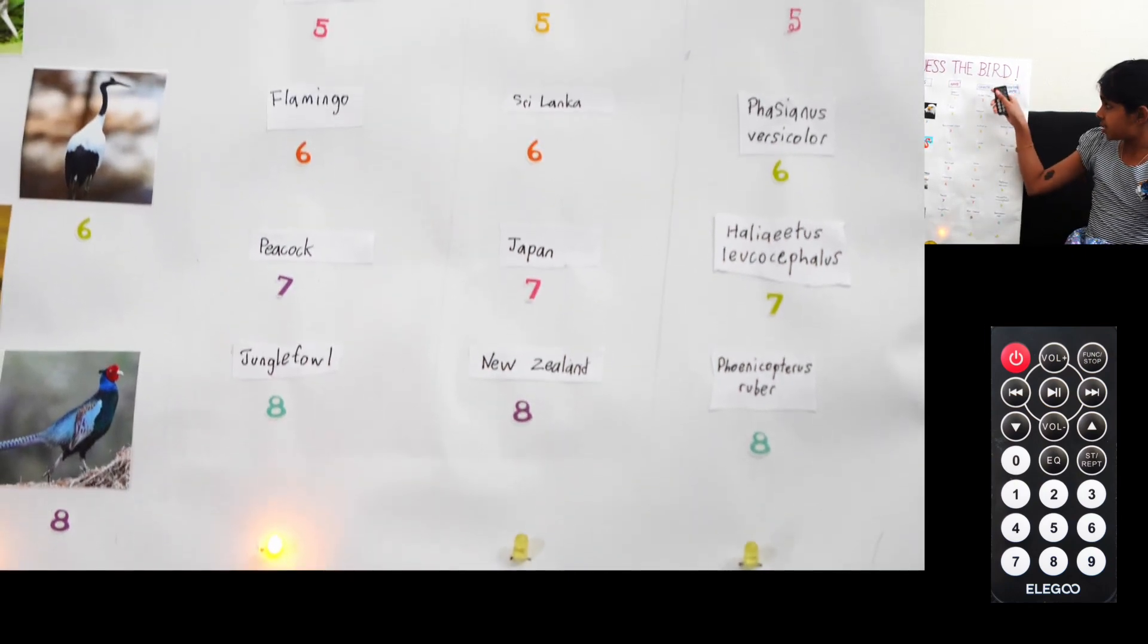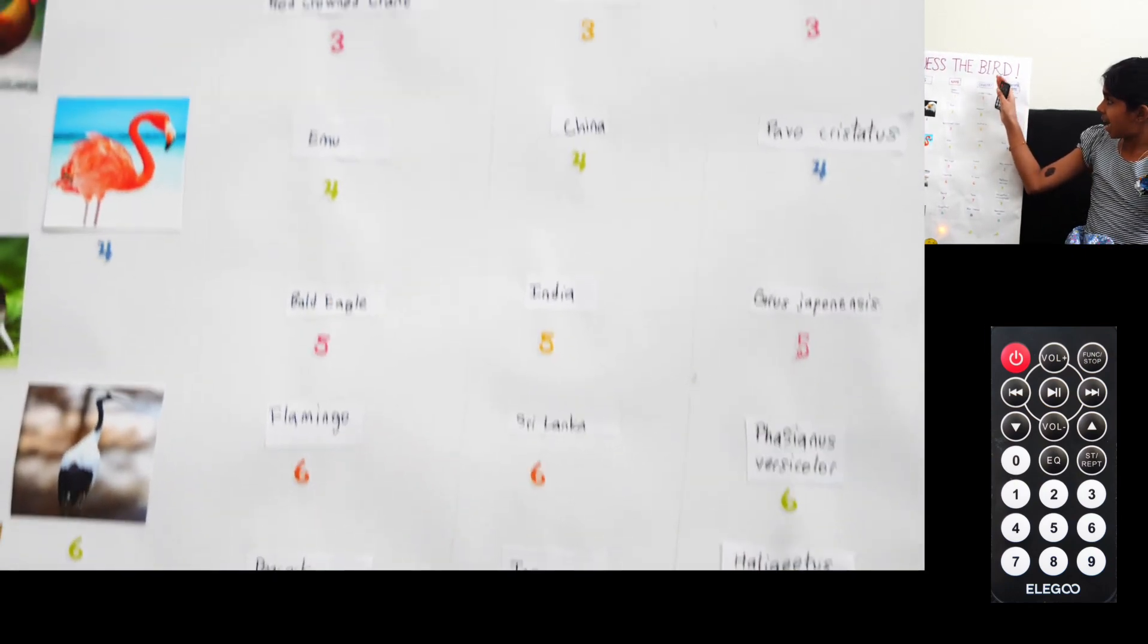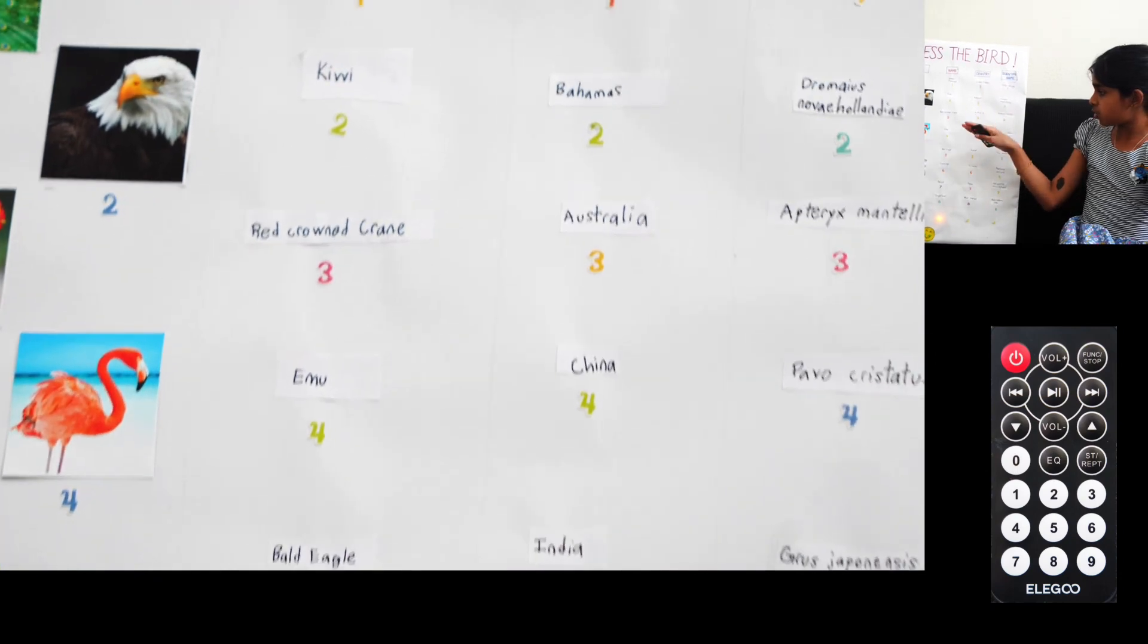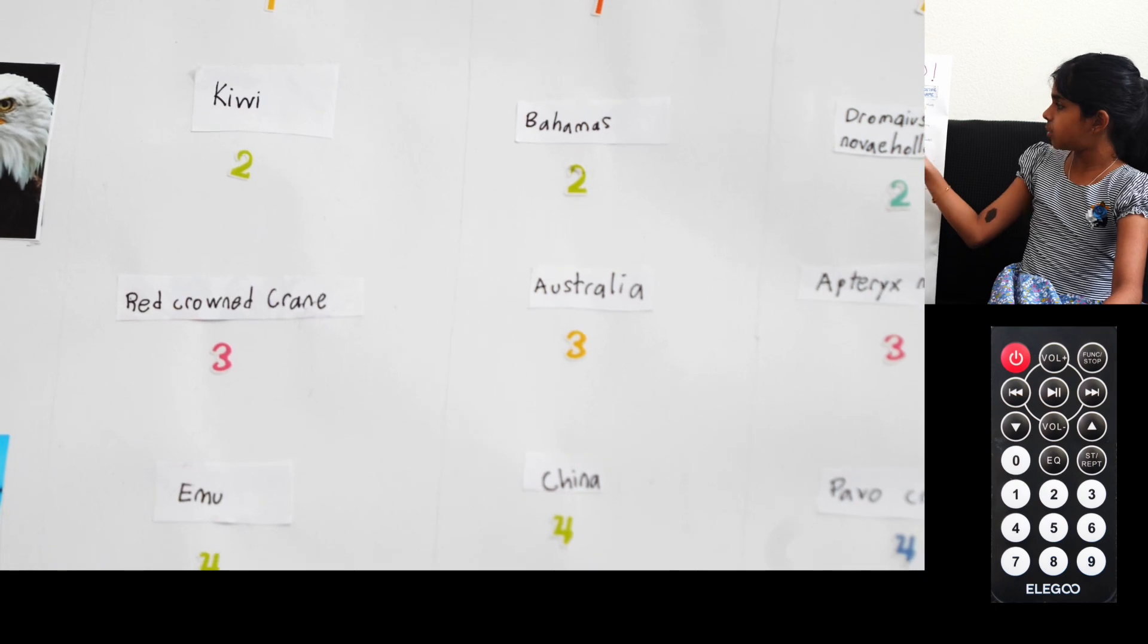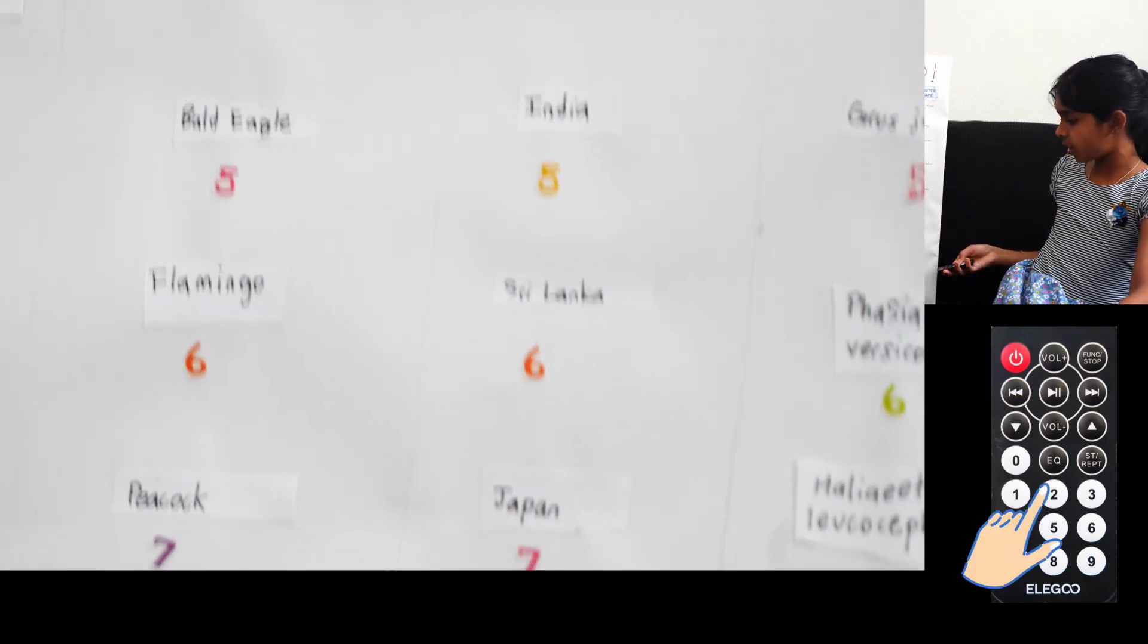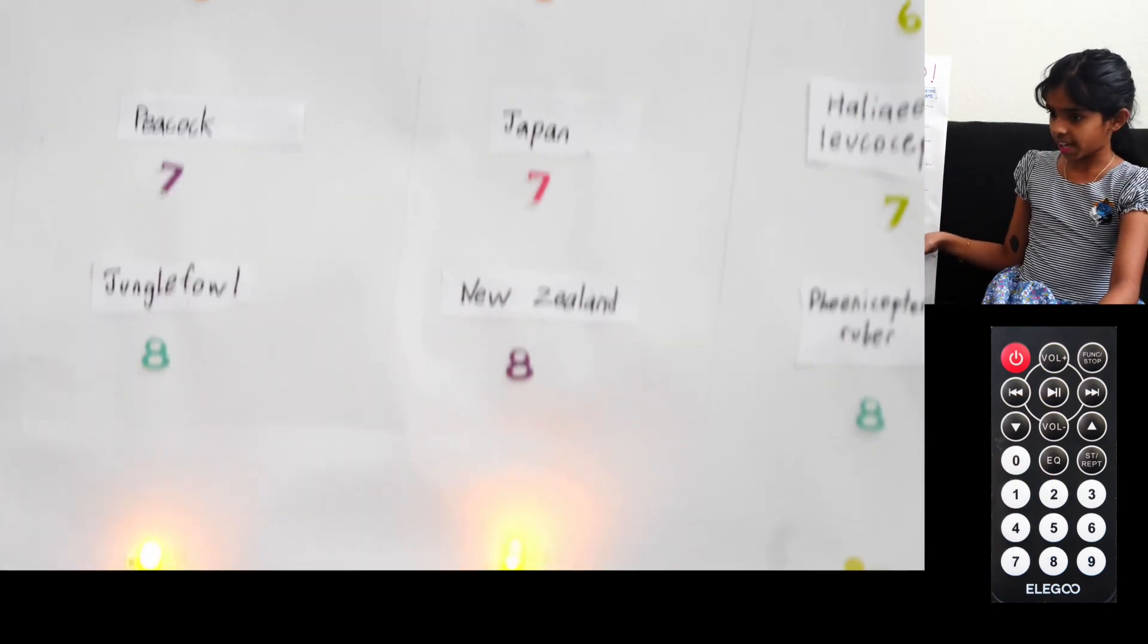Now we move on to the country section. So we have to guess which country the bird symbolizes. Flamingo is a national bird of the Bahamas, which is number two. So we click two on the remote. And this also lights up.